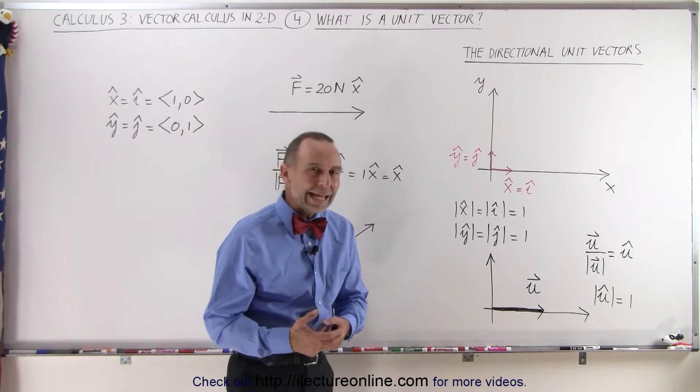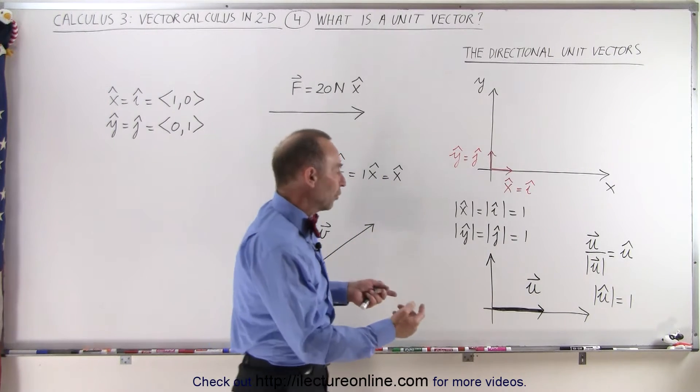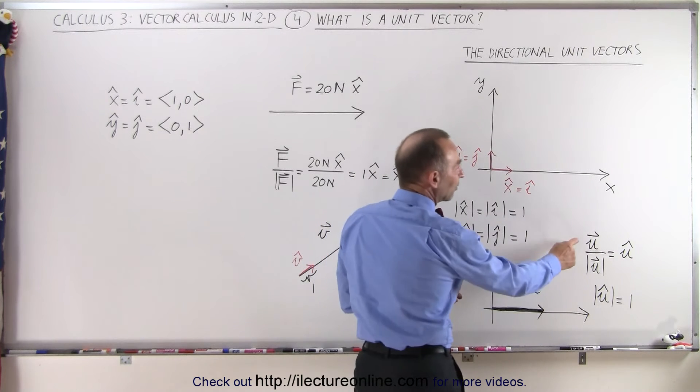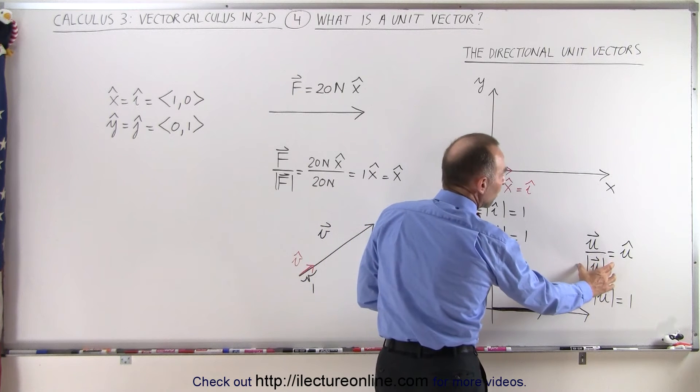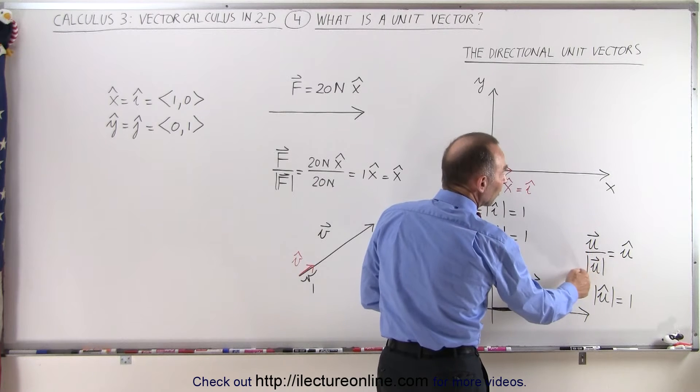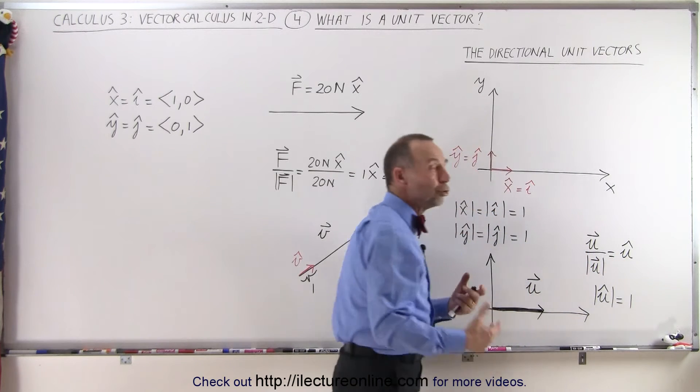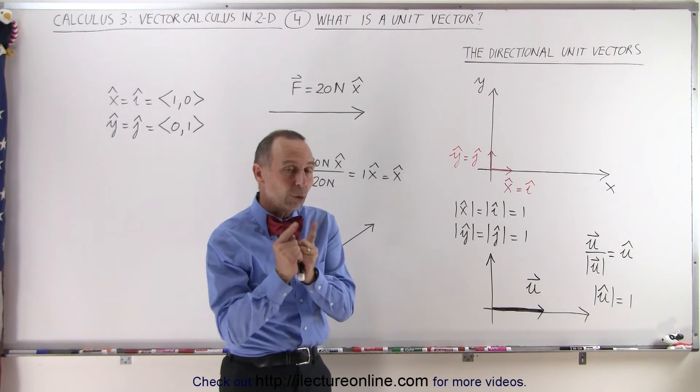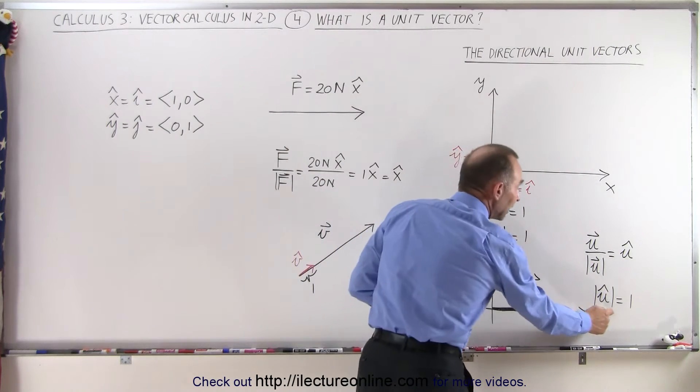But what if we just had any old vector? Let's say the u vector, which had a certain length greater than 1. And now we take that vector and we divide it by its own magnitude. The result of that is that we get the unit vector u pointing in the same direction as u, but the length of the unit vector will only be equal to 1, just as we indicated here.